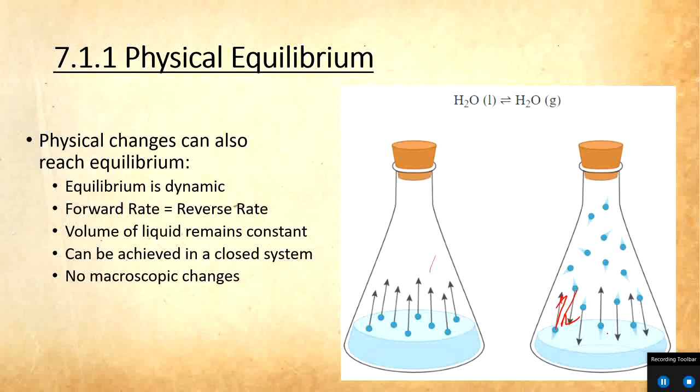This is the same for if you have a solid liquid equilibrium. If you have ice and water and leave it at zero degrees, the ice and water will constantly, on the surface of the ice, will constantly be freezing and melting. But the same principles apply. So the equilibrium must be dynamic. The forward rate has to be equal to the reverse rate. The volume of liquid remains constant. So that's like before we said the concentrations remain constant. In a physical, the volume will remain constant. It can be achieved only in a closed system. And there's no macroscopic changes.